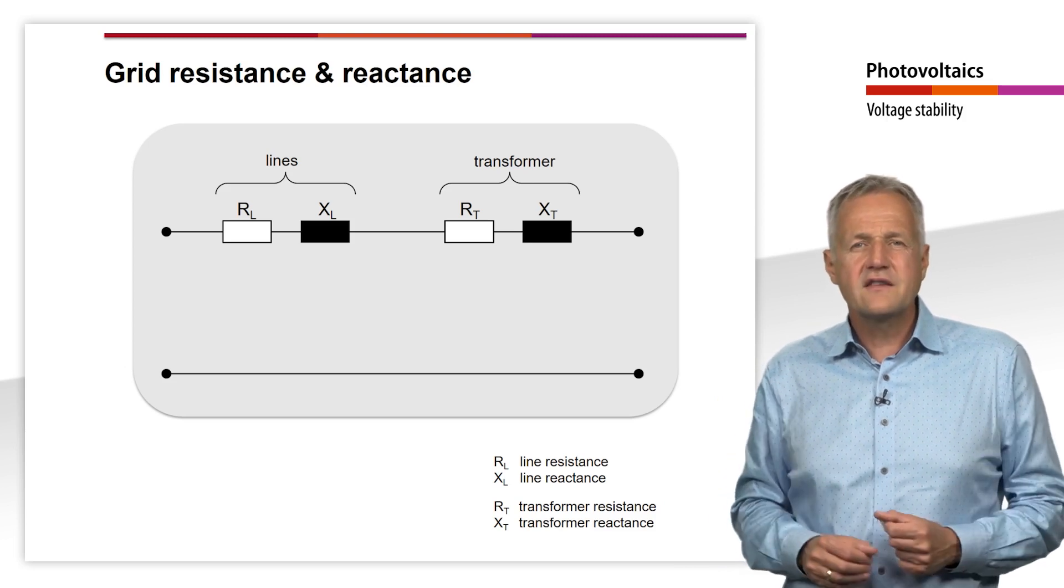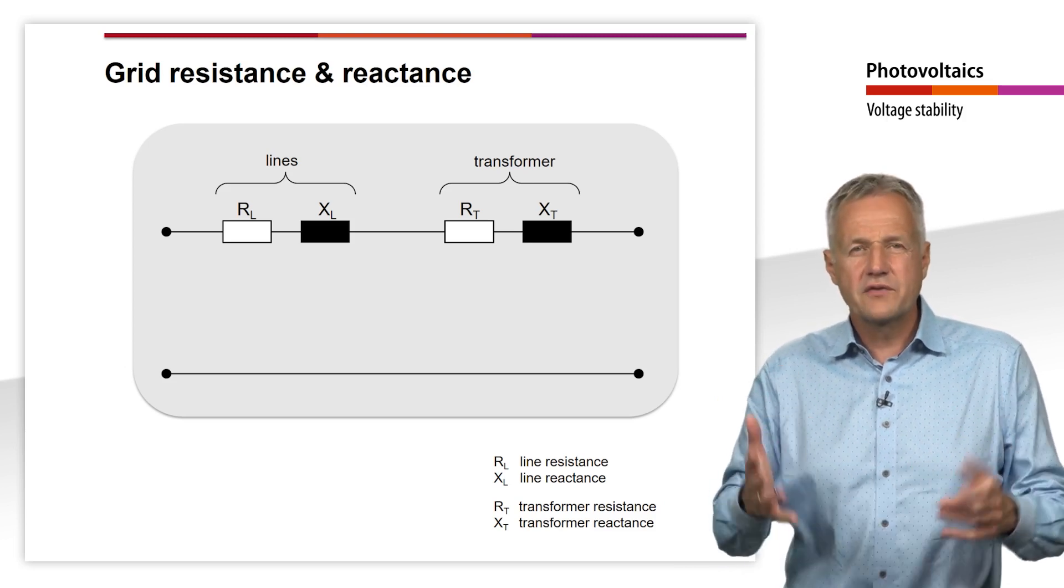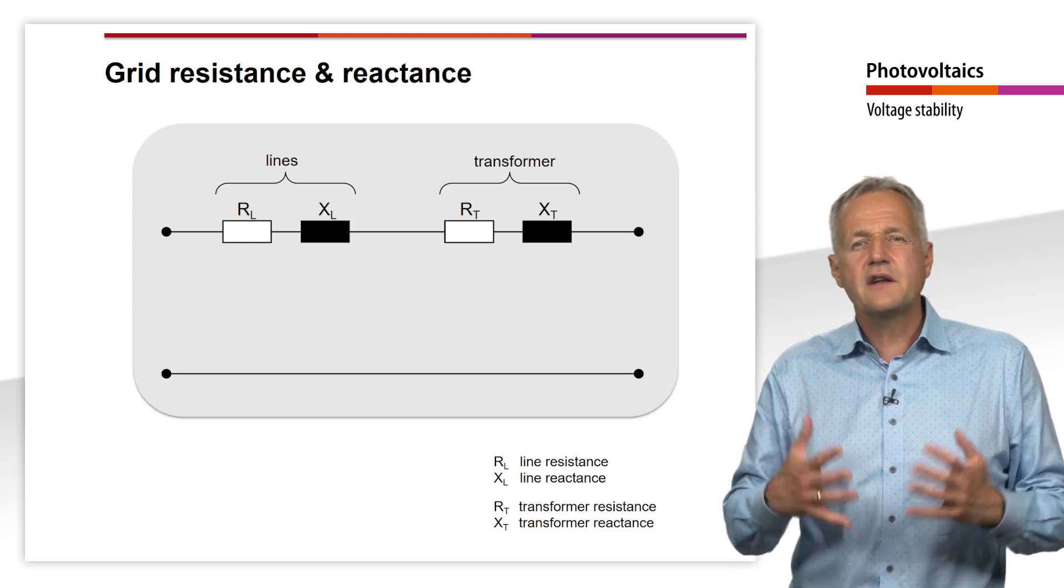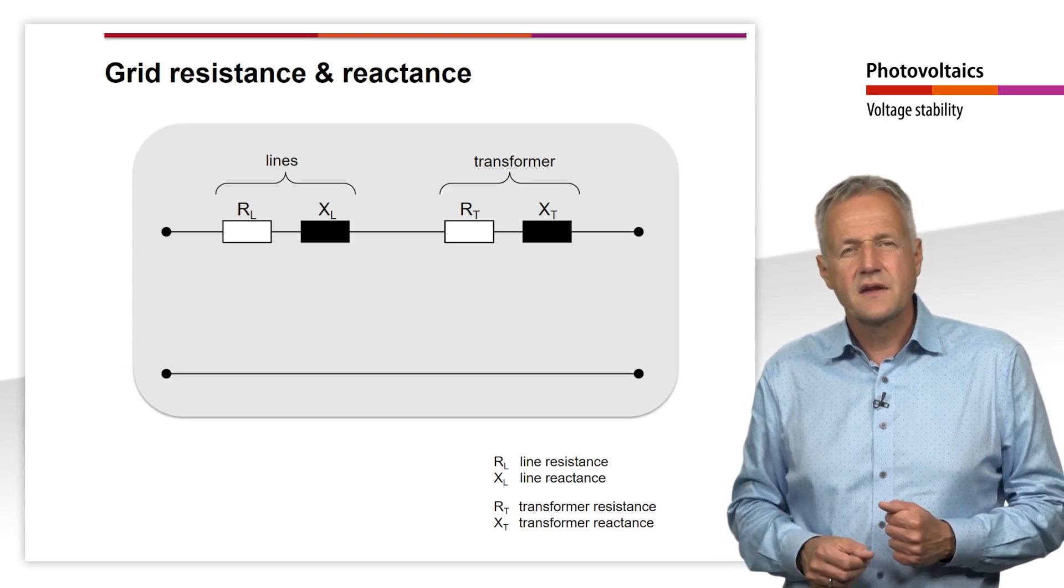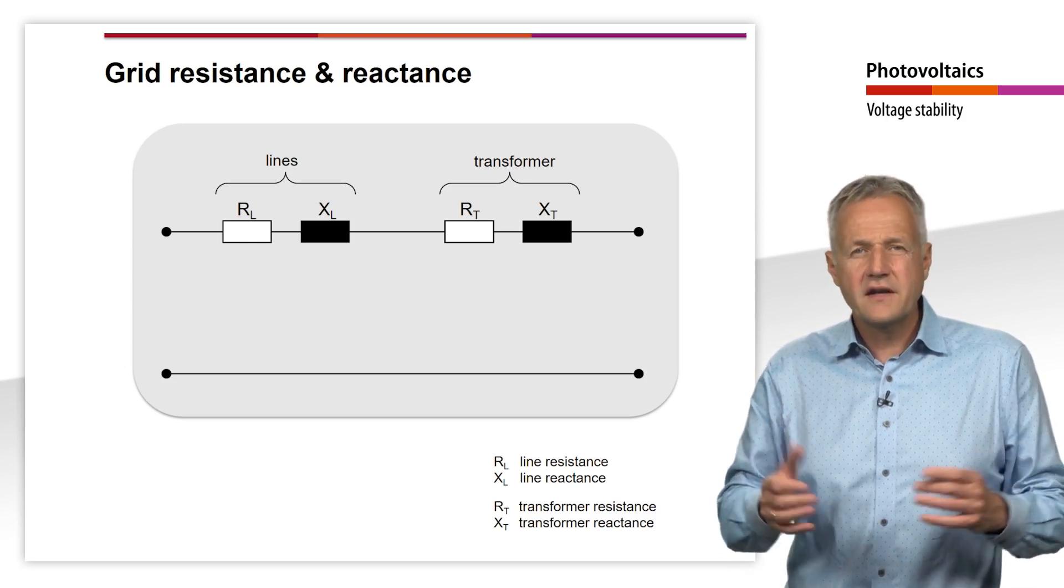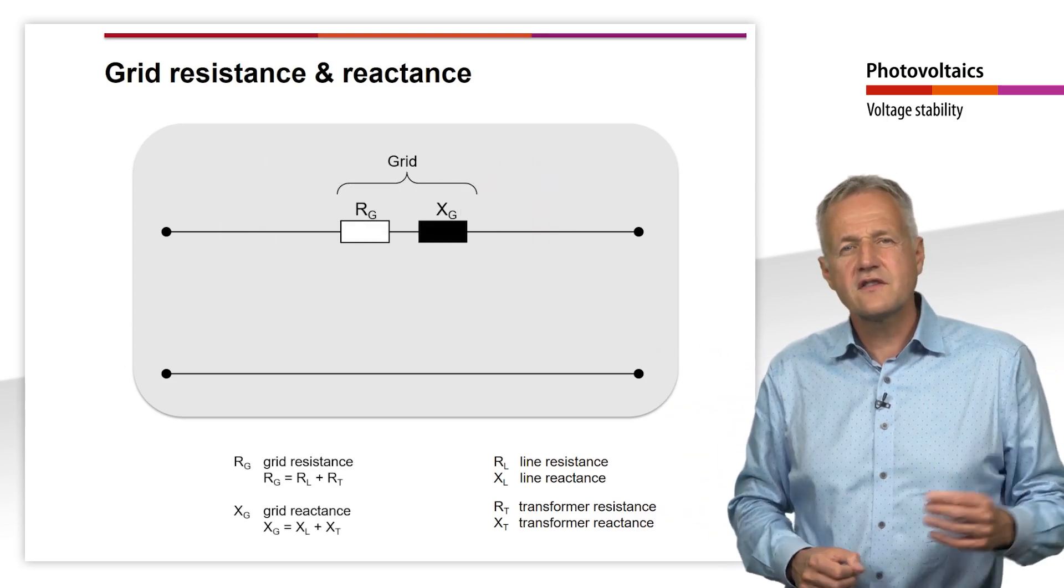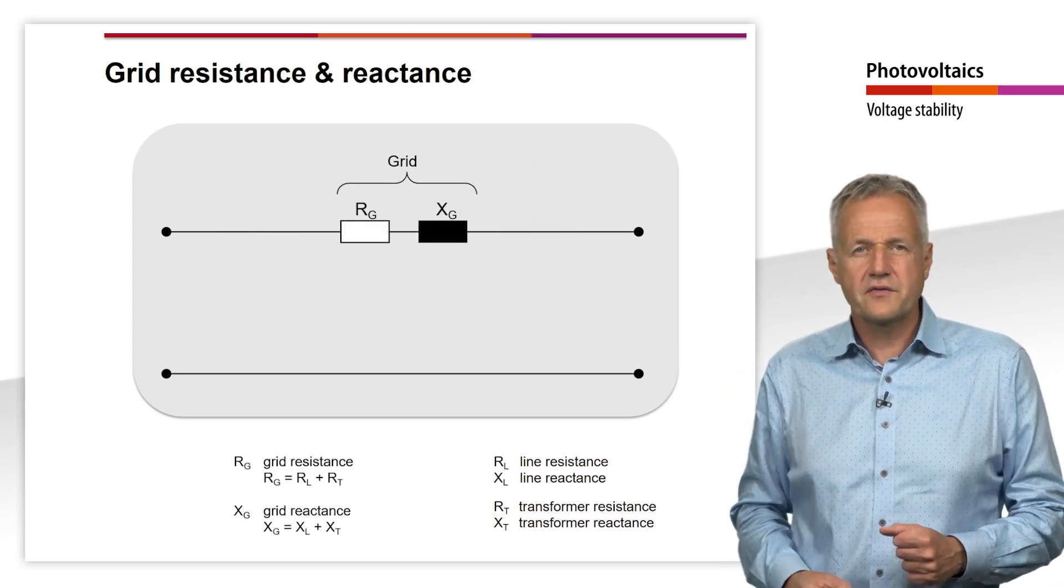In fact, both the lines and the transformer have an ohmic resistance R and a reactance X. To simplify matters, we combine the two into a common resistance and a common reactance of the grid.